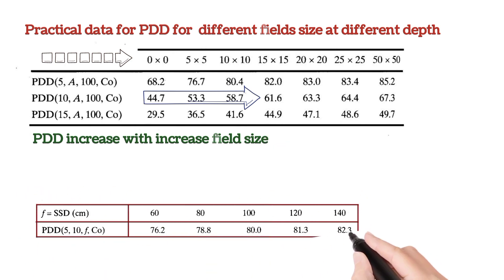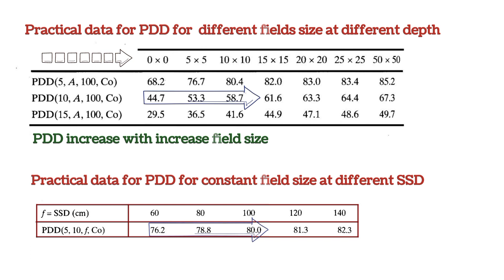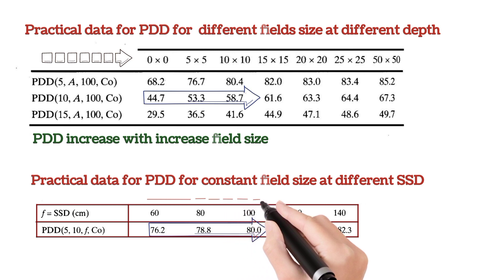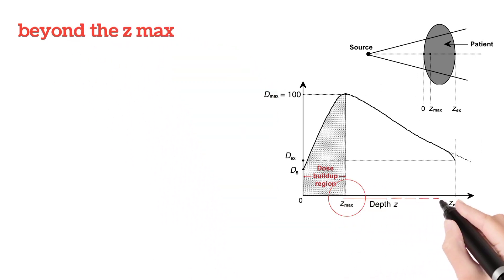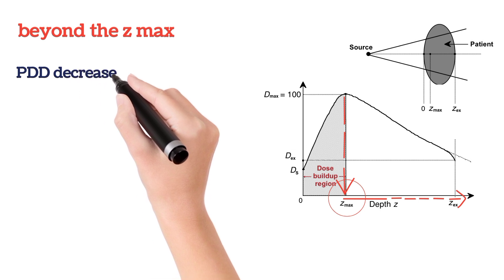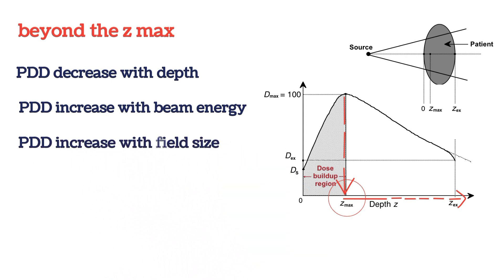This is the practical measured data for PDD for different SSD values. PDD is directly proportional to source-to-surface distance, meaning PDD value increases with increasing SSD. In summary: PDD decreases with depth beyond Z max; PDD increases with beam energy; PDD increases with field size; and PDD increases with SSD.